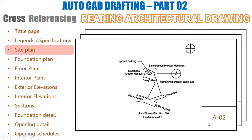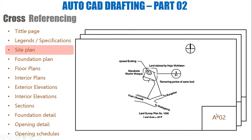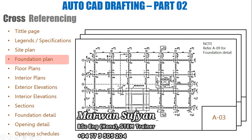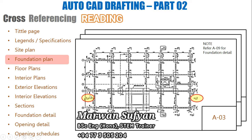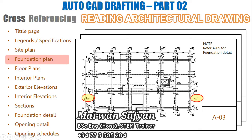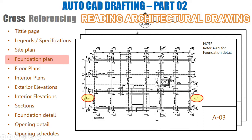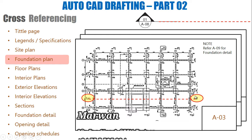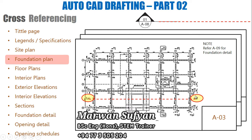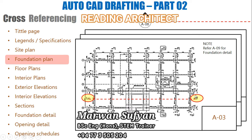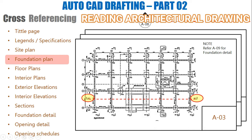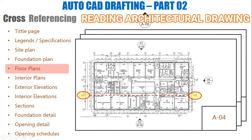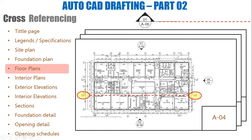The sheet number here is A02. Jumping to the foundation plan, we can see section cut symbols. If I zoom in, this is the typical section cut symbol — it shows from which line the building has been cut. We have already gone through section cuts in detail. There is sheet A03, and jumping to the floor plan we can find the same section cut line.